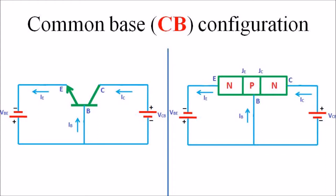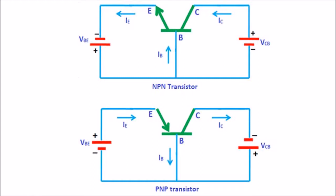This condition results in the amplification of the input current, and the common base configuration for both NPN and PNP transistors is shown in this figure. From this circuit diagram of NPN and PNP transistor, it can be seen that for both NPN and PNP transistors, the input is applied to the emitter and the output is taken from the collector. The common terminal for both the circuits is the base terminal.